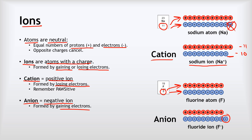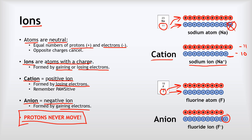A couple of really important things to remember. Important thing number one is that the protons never move. When we form ions, it's always about electrons moving. The protons started at 11 and finished at 11 for sodium; for fluorine, protons started at 9 and finished at 9. We don't gain or lose protons — we just gain or lose electrons. The other thing to remember is how to recall which is which: cations are positive, and remember that because cats have cute little cat paws.